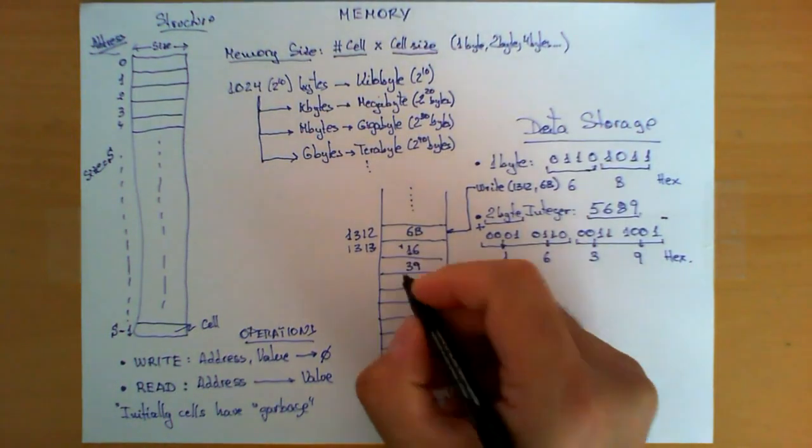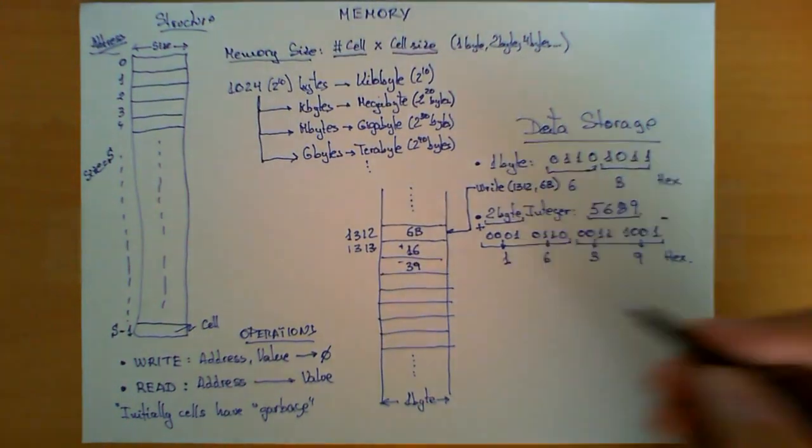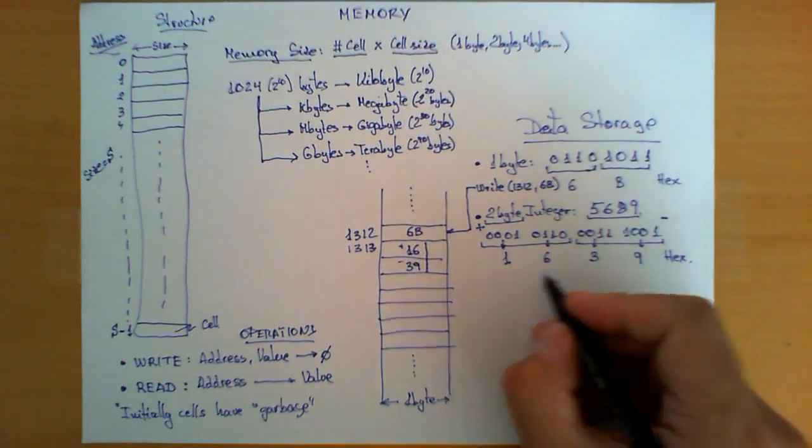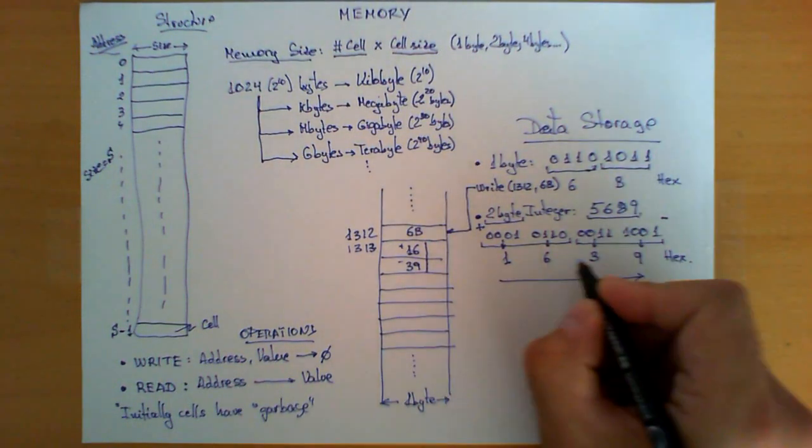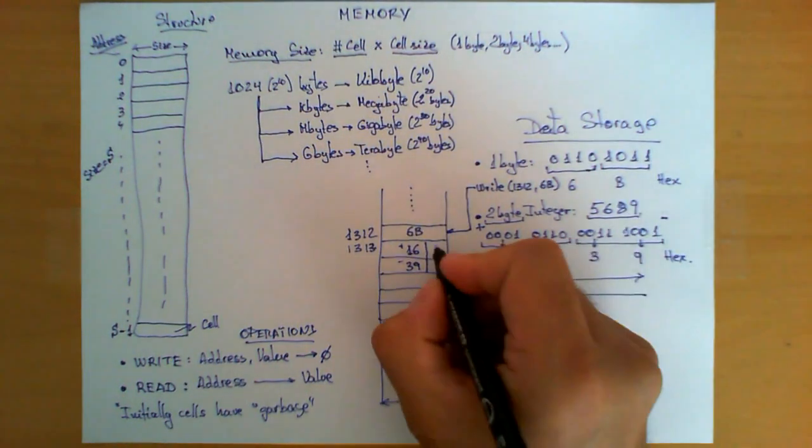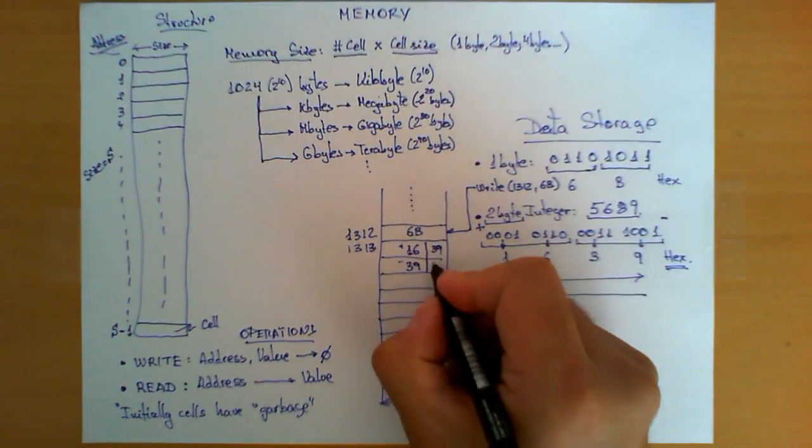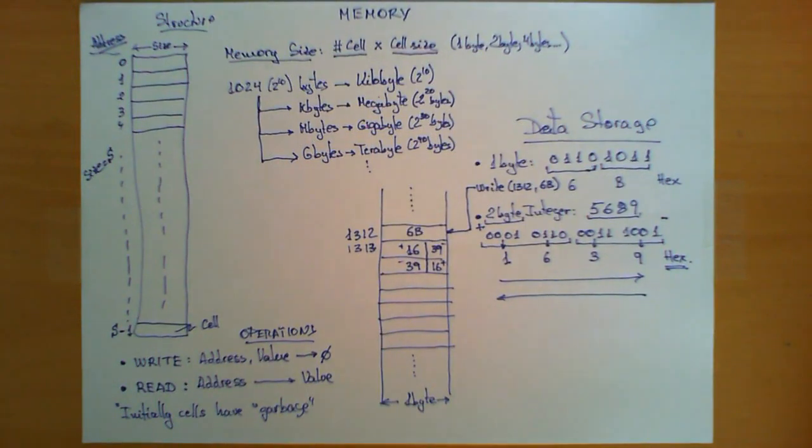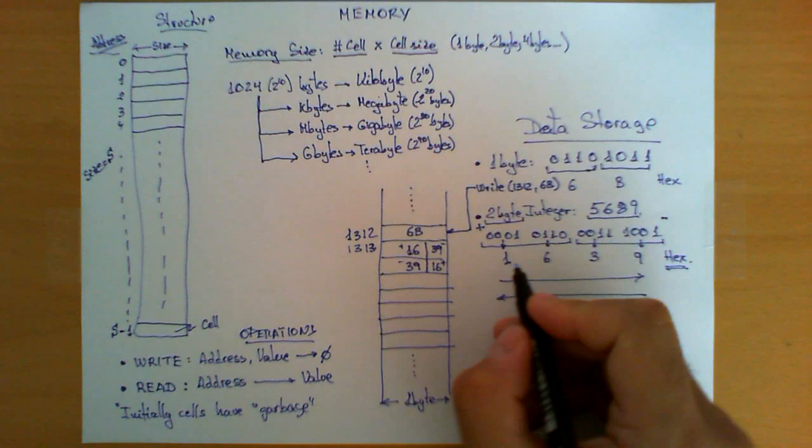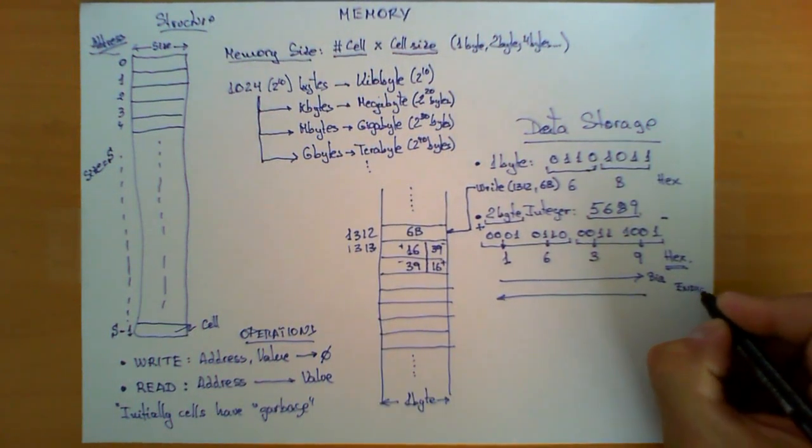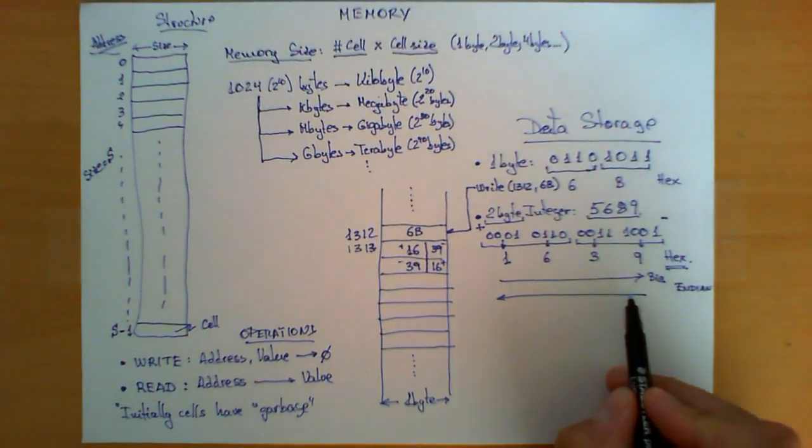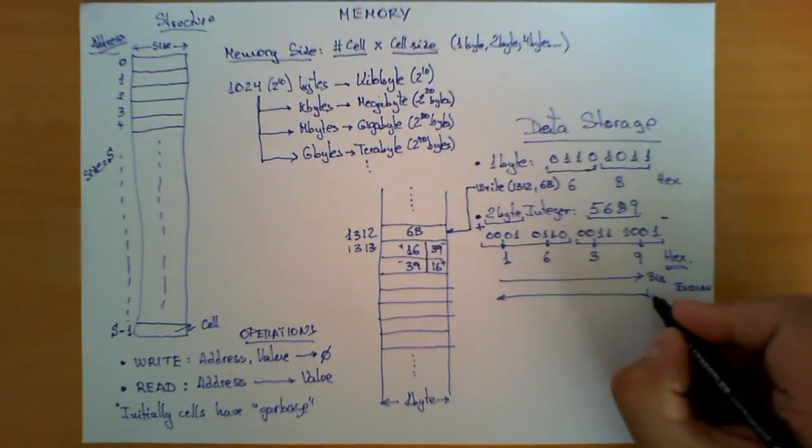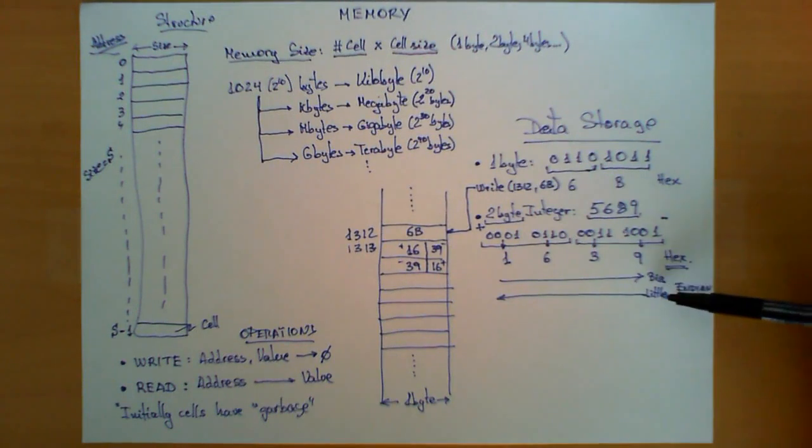However, another possibility would be to store it following the other order. We can follow this convention, store first this byte and then this byte, or we can store first 39 and then 16. It turns out the two choices are equally valid and are sometimes used in different memory chips and computer systems. When we store first the most significant byte, we call this notation big endian. When we store starting from the least significant byte, we call this little endian.